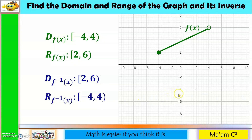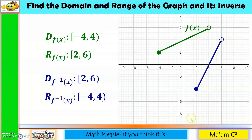We graph the inverse by interchanging the coordinates: the point (−4, 2) becomes (2, −4), and (4, 6) becomes (6, 4). Connecting these points and drawing the line y = x shows that the two graphs are reflections of one another, confirming they are inverses.